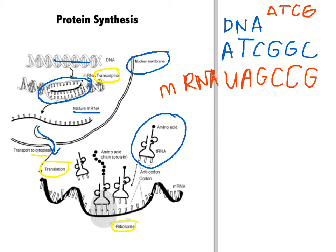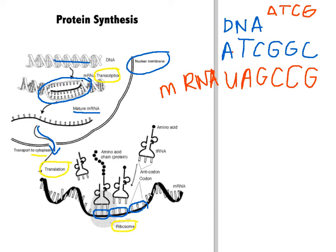Our tRNA is right here — it's kind of shaped like a fork, or like a T. In a tRNA strand, we have several different parts. We have the amino acid, which is this little spot right here, and that's going to bind together with other amino acids to make a protein. The other part of the tRNA is the anticodon — a sequence of three nucleotides at the bottom of the tRNA strand. It's called an anticodon because it's going to match to a codon on the mRNA strand. A codon on the mRNA strand is also a sequence of three nucleotides. So in mRNA we have codons, and in tRNA we have anticodons.